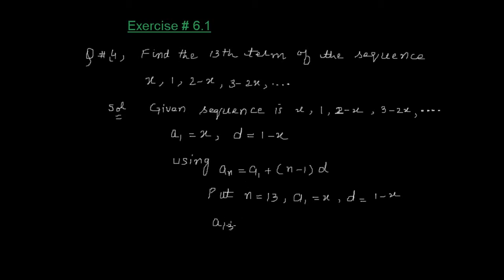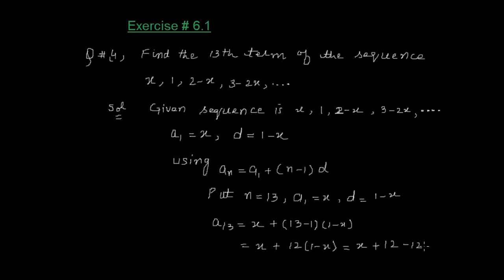A1 = X, D = 1 minus X। तो A13 = X + (13−1)(1−X) = X + 12(1−X) = X + 12 − 12X = 12 − 11X। यही हमारी required 13th term है: 12 minus 11X। अब next question number 5।